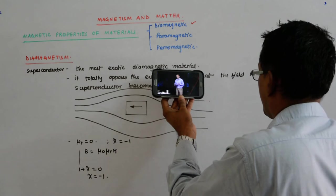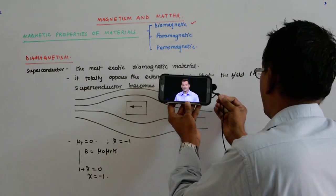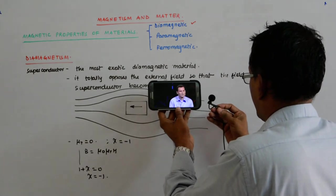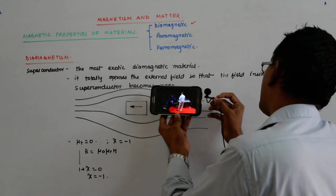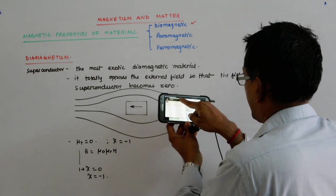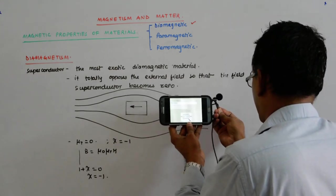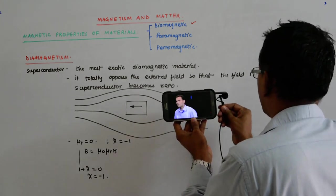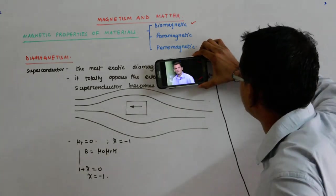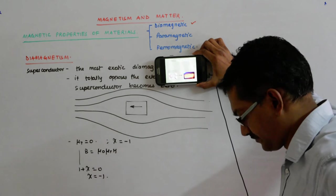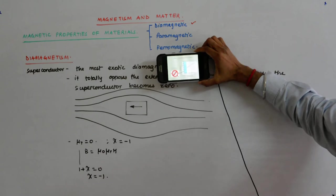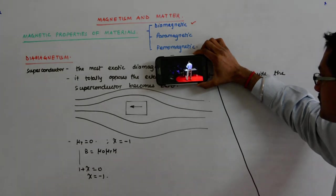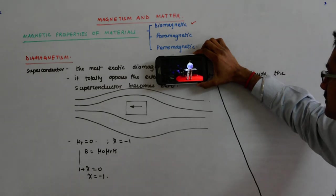So a superconductor is defined by two properties: the first is zero electrical resistance and the second is the expulsion of magnetic field from the interior of the superconductor. It sounds complicated right? But what is electrical resistance? So electricity is the flow of electrons inside the material and these electrons while flowing they collide with the atoms and in this collision they lose a certain amount of energy and they dissipate this energy in the form of heat and you know that fact. However inside the superconductor there are no collisions so there is no energy dissipation. It's quite remarkable, think about it.